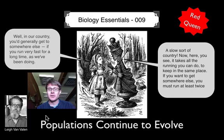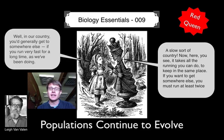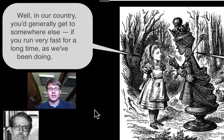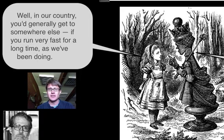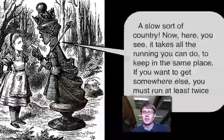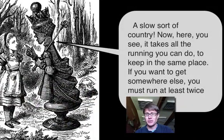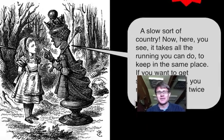One of my favorite theories in all of evolution is the idea of the Red Queen theory. It essentially comes from Alice Through the Looking Glass, where Alice is running around with the Red Queen. She eventually stops and says, 'In my country you generally get somewhere if you run as fast as you can.' And the Red Queen says, 'You live in a slow sort of country. Here it takes all the running you can do just to stay in the same place. If you want to get somewhere else, you must run at least twice as fast.'